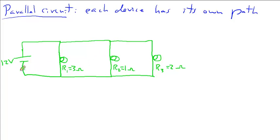I drew a parallel circuit using the same elements as our last example of the series circuit. We have a 12 volt battery, resistor 1 is 3 ohms, resistor 2 is 1 ohm, and resistor 3 is 2 ohms. Same questions as before.